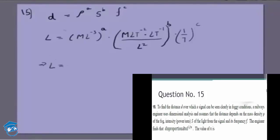Which means L equals M to the power a plus b, L to the power of minus 3a. And here we don't have any power of L because L and L squared cancel. And here also we don't have any power of L.